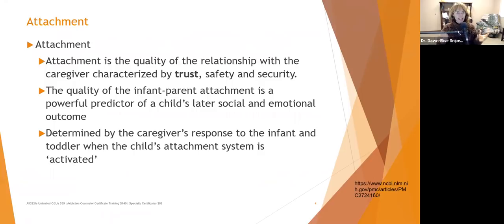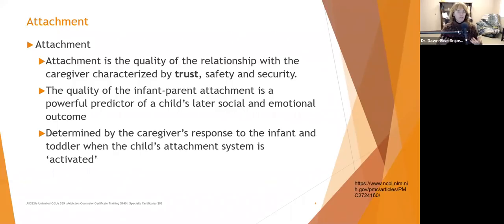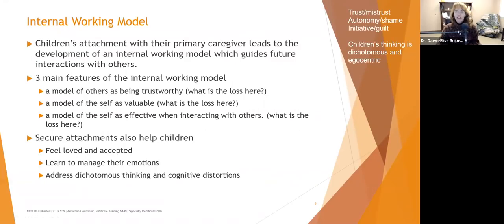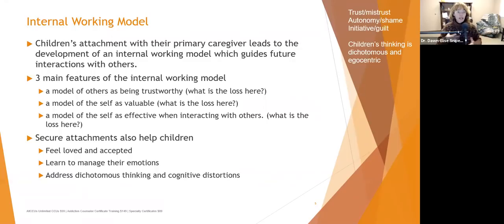Attachment is determined by the caregiver's response to the infant and toddler when the child's attachment system is activated. When babies are young, it's activated when they need something. When they're older, it's activated when they experience anxiety or fear and need comfort. Understanding what kinds of comfort the child needs at different developmental stages can be challenging for some parents. Children's attachment with their primary caregiver leads to the development of an internal working model which guides future interactions with others.